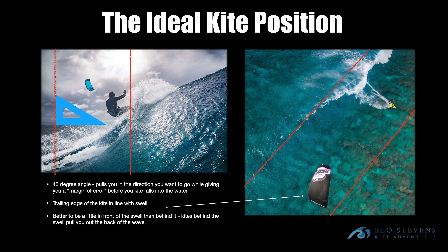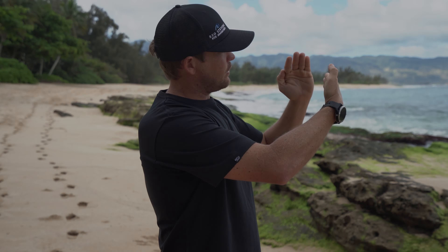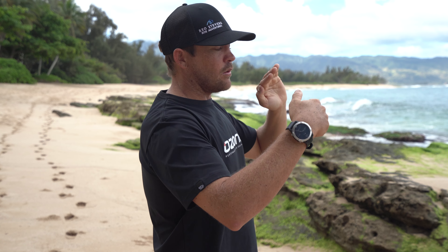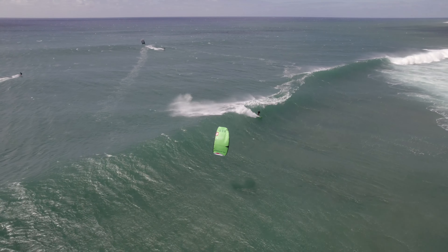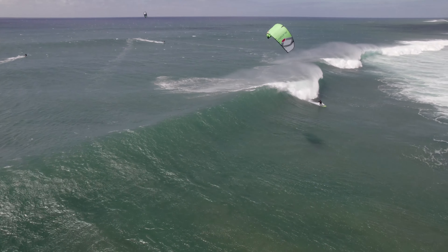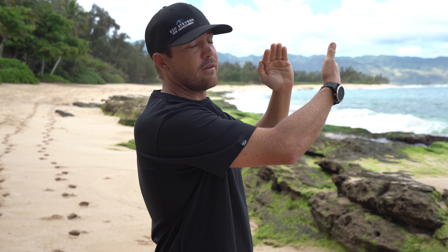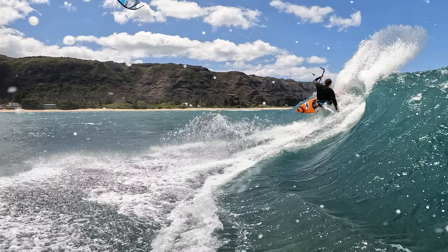In addition to having it at that 45-degree angle, you're going to line up the trailing edge of the kite with the swell line itself. This keeps you on the wave. If your kite's too far behind, it'll pull you out the back. If it's too far forward, you can easily pass it and it'll fall in the water. If there's any wiggle room, it's better to have your kite a little bit further forward than further back.